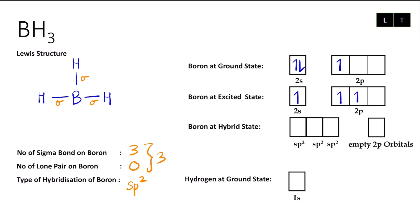Next, we have boron at hybrid state because we want to form sp2 — meaning we use three unpaired electrons. These will combine to become sp2, each of them having one electron. What's left is one empty orbital here — this is the empty 2p orbital. This must still be drawn — it is compulsory. So that's settled for the hybridization process for boron, our central atom.